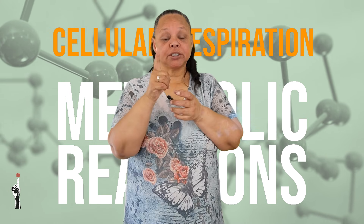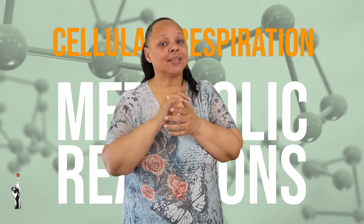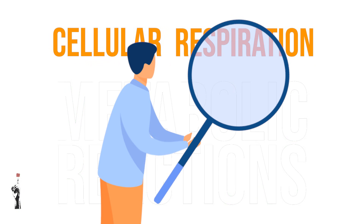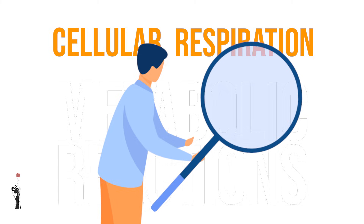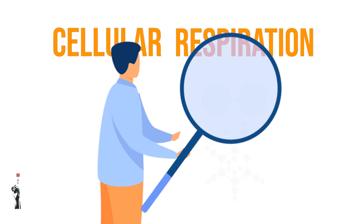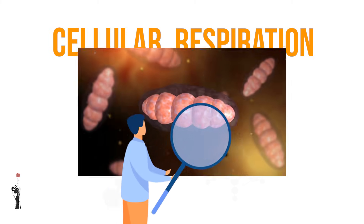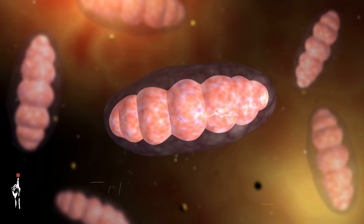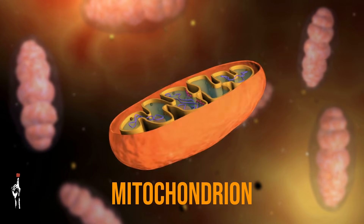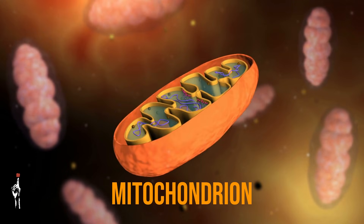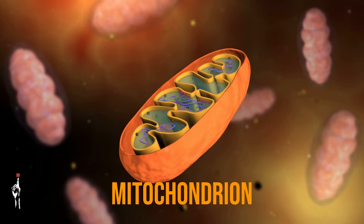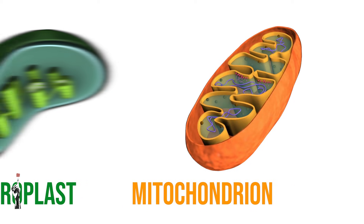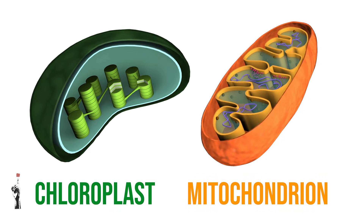First we need to identify the site where cellular respiration takes place. This reaction takes place in a specialized organelle known as the mitochondrion. Remember, photosynthesis takes place in an organelle called the chloroplast.